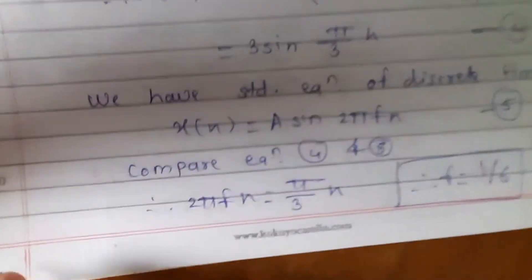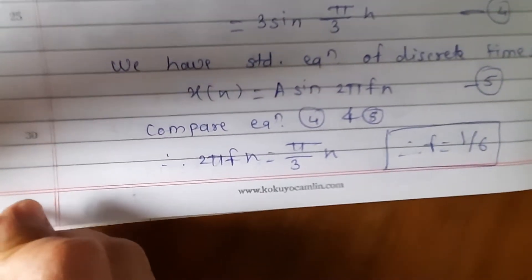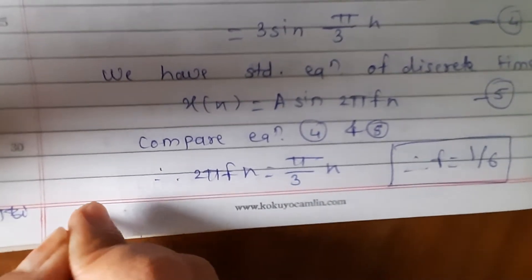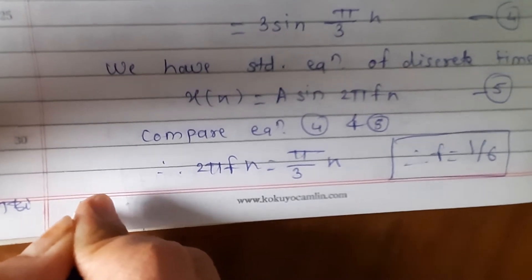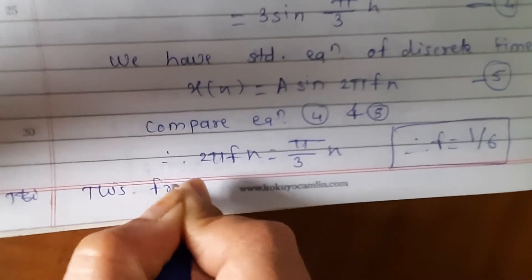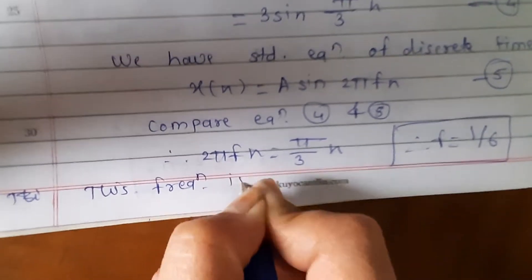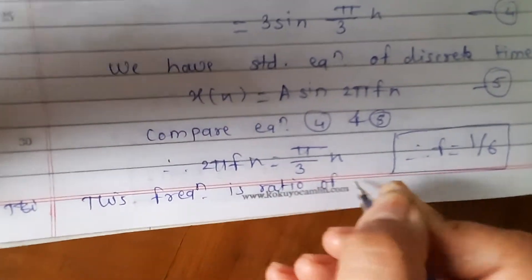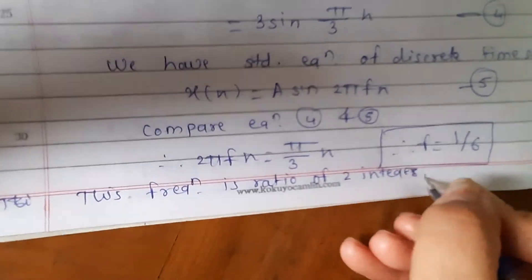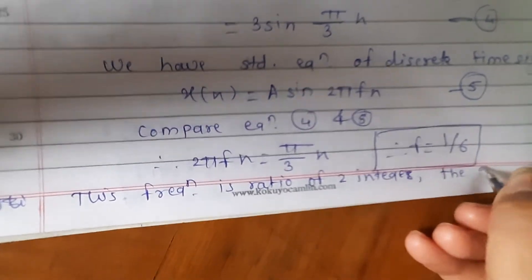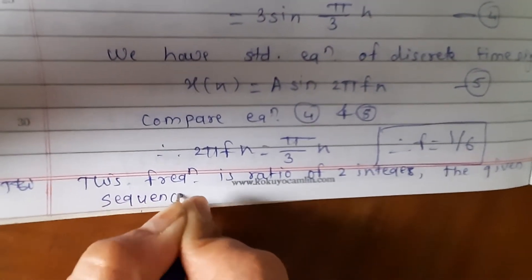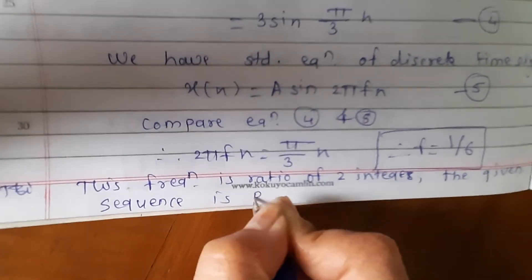So we can write: this is the frequency of the discrete time signal and it is a ratio of 2 integers. Therefore the given sequence is periodic in nature.